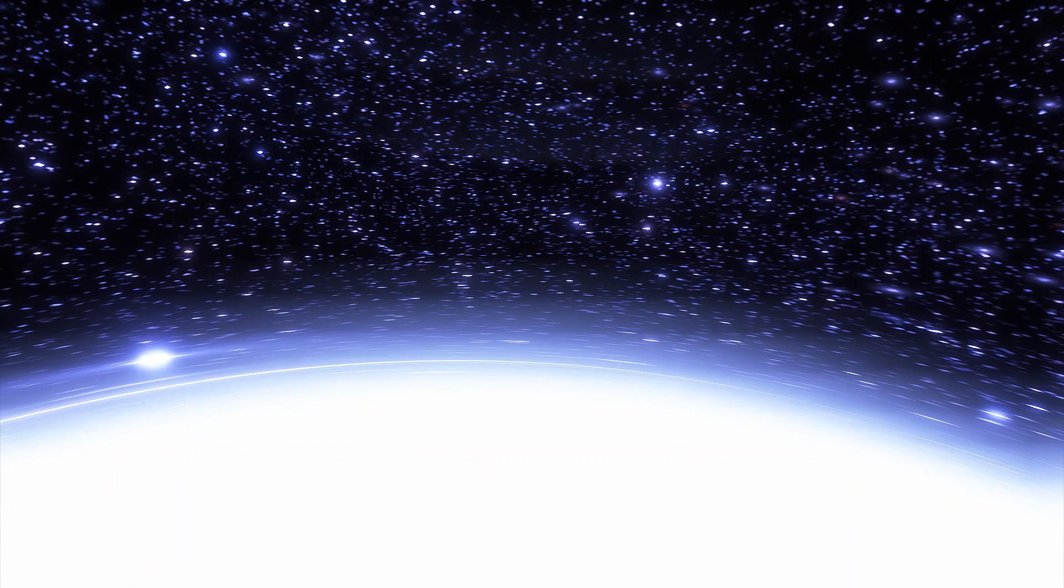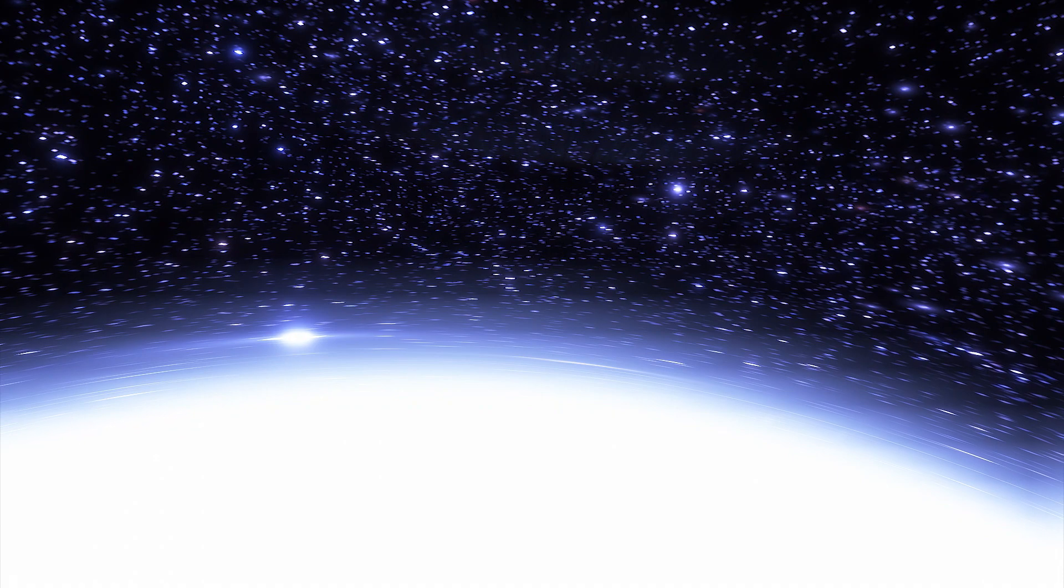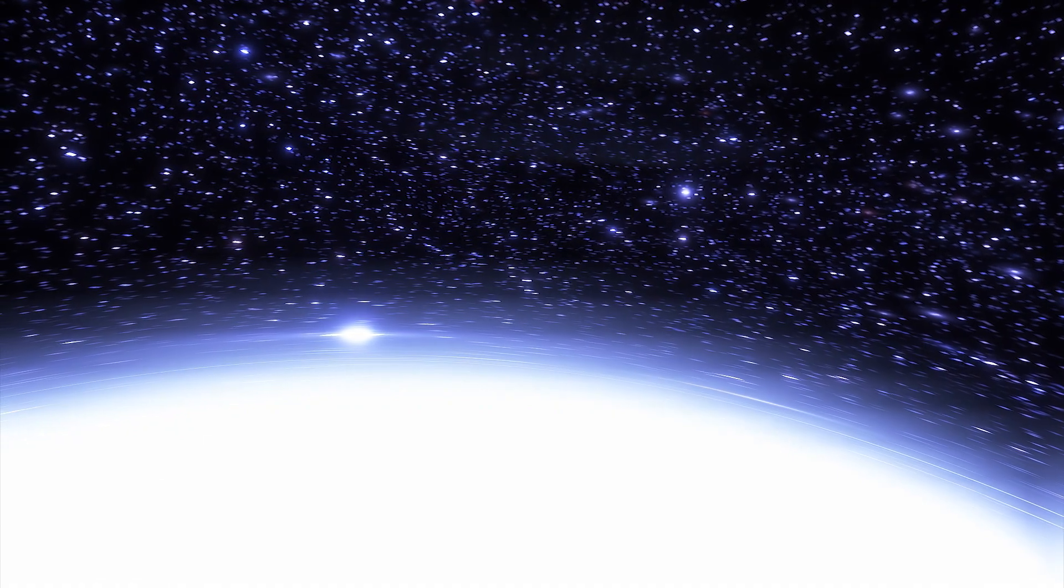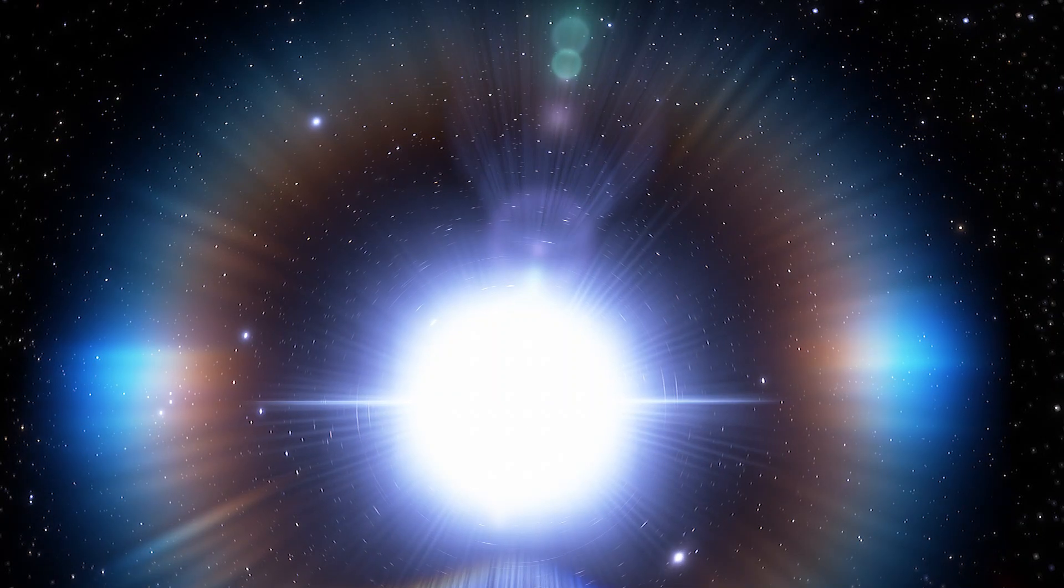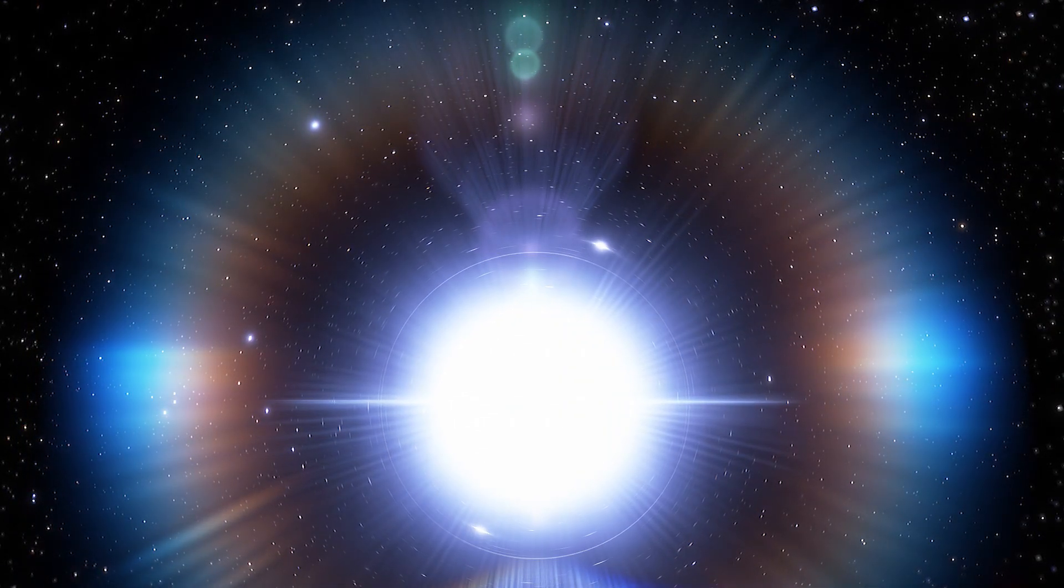Usually, this lensing process can magnify objects by up to 50 times. But this time, the newfound star was magnified more than 2,000 times. That's because a star was briefly passing through the line of sight between Hubble and Icarus.